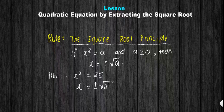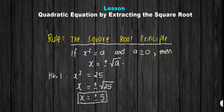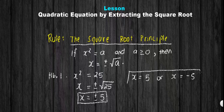Our a here is 25, so we can simply simplify this one. The square root of 25 is positive or negative 5, and that will be our final answer. The positive or negative 5 means there are two possible answers — it can be positive 5 or negative 5. Those are our x values.